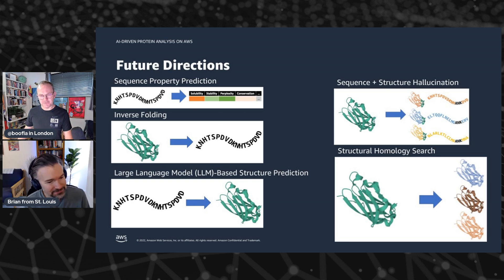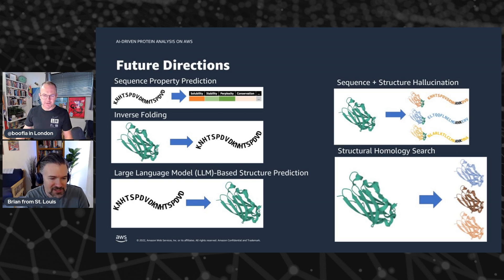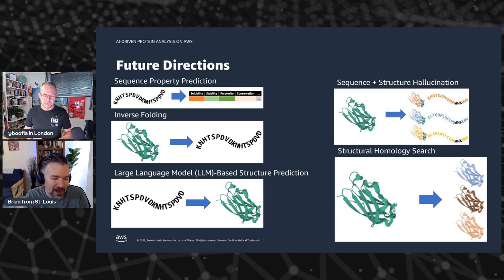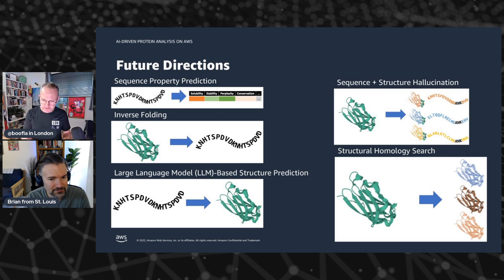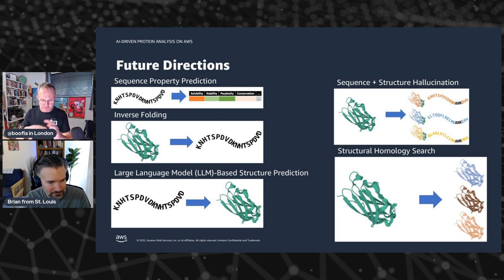This idea of using artificial intelligence to analyze and design proteins is really exciting because it means we can create therapeutics, understand processes about the body, and do so in a way that allows a lot of different types of teams to get involved. As a solutions architect at AWS, my goal is to make this as easy and accessible as possible. Not only is OpenFold open source, but we've also open-sourced the actual solution we built for deploying AlphaFold and OpenFold — that architecture is up on GitHub for people to use.